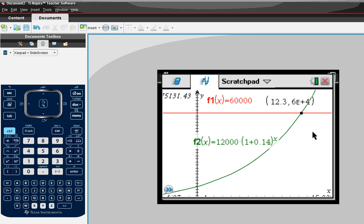That 6 times e plus 4, that just means 6 times 10 to the 4th power. That's 60,000. So the 12.3, remember that we replaced the t in our equation with the x. So the 12.3 is our time value. Therefore, it will take 12.3 years for the guitar to reach a value of $60,000.